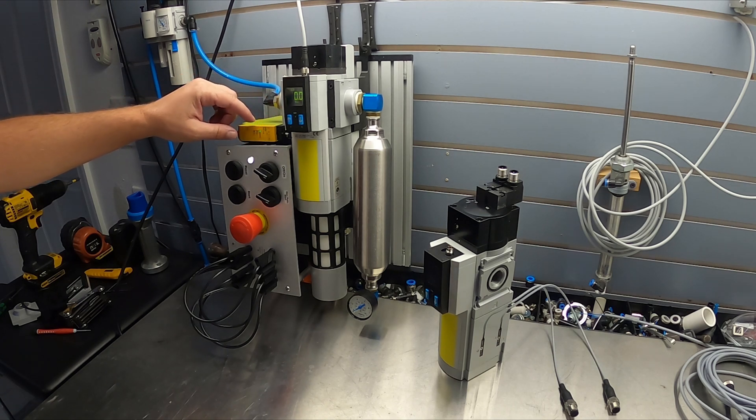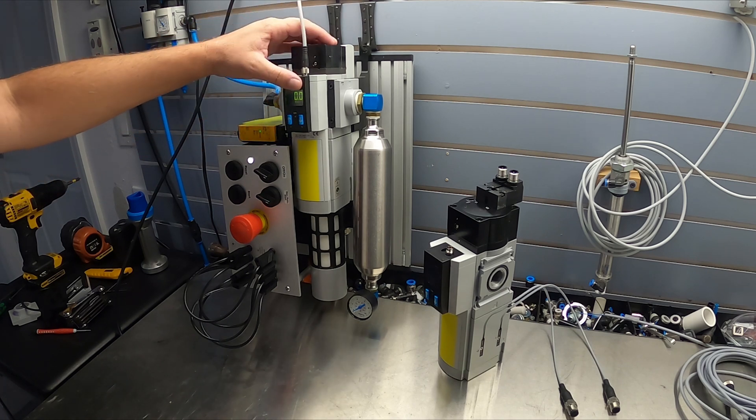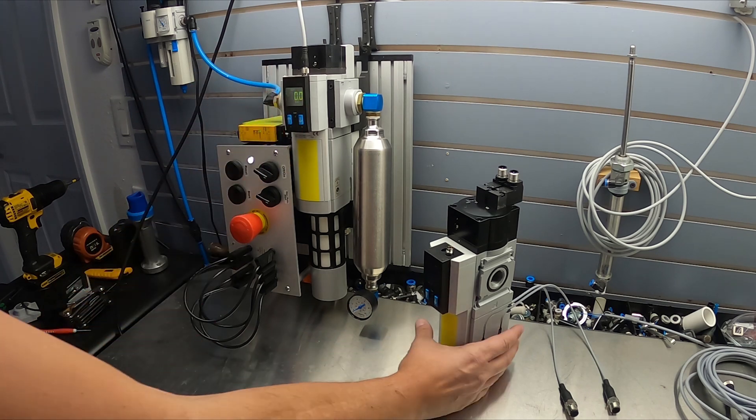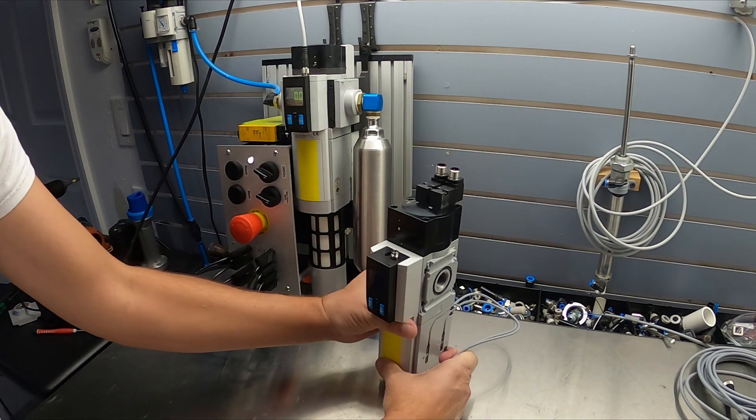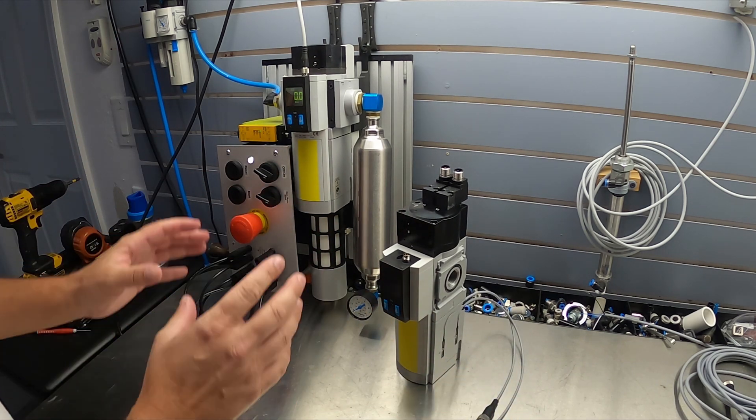So this does a self-check and this does a self-check. And that self-check logic is built into the device, whereas with this one that self-check logic would have to be done at the control panel. That is the biggest difference between the two.